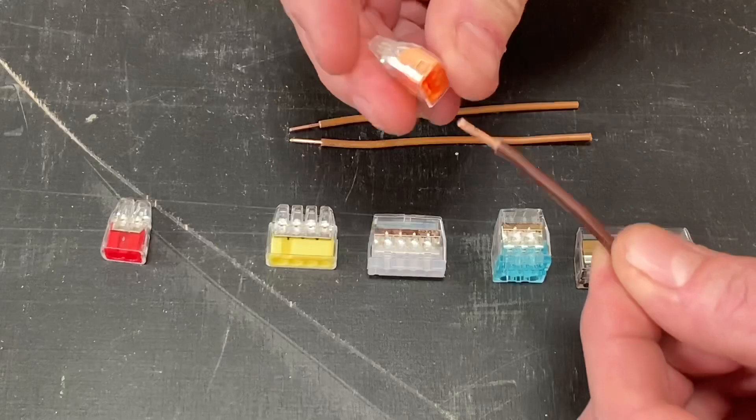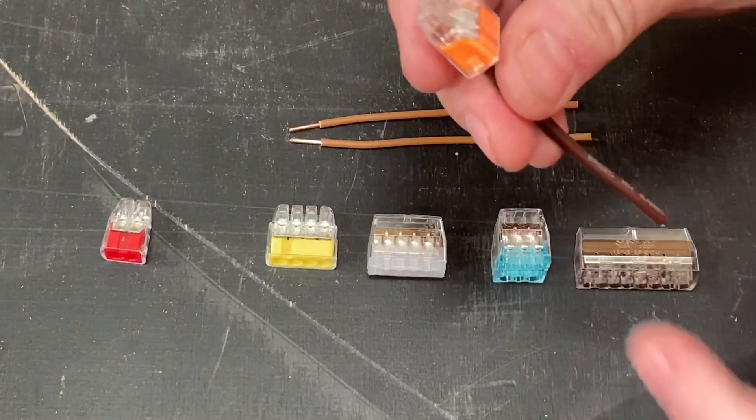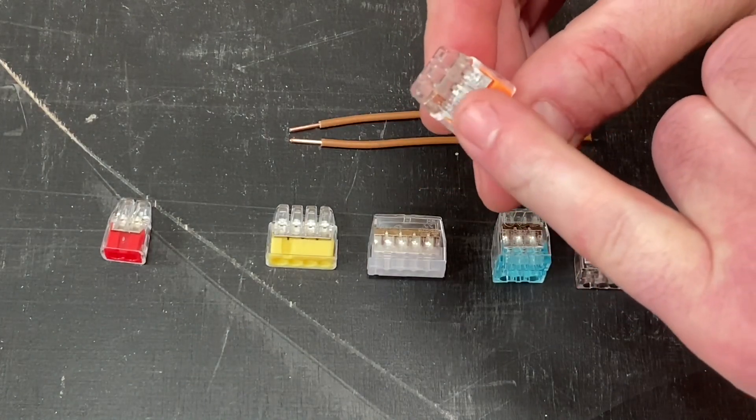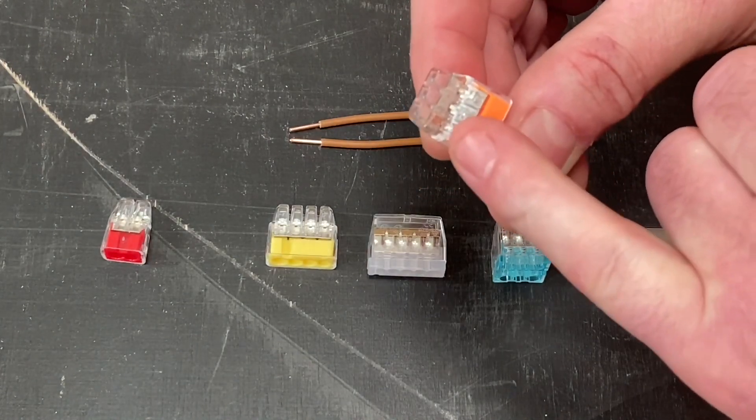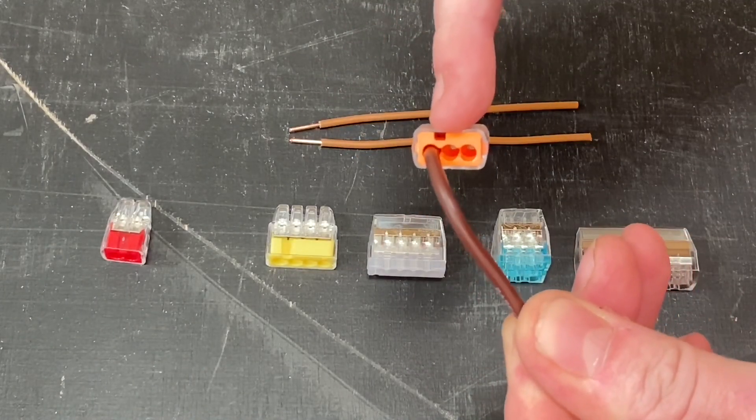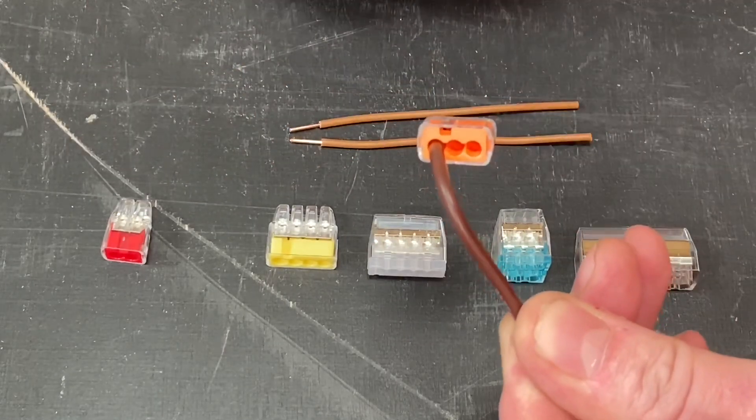So if I push one into here and just push it home, what I like about it is this clear section here allows you to see that the conductor is actually in and connected to the copper itself. We've also got a test point on them just here so you can probe in to test at this position as well. They're the same on all of them.